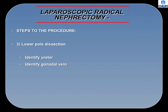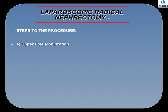Lower pole dissection usually involves the identification of the ureter and the gonadal vein. These two are transected and allow for the surgeon to work toward the renal hilum. Step 4: Upper pole mobilization, in which the surgeon's attention is drawn toward the area of the adrenal gland, as well as dissecting the kidney free from the spleen or the liver through all tissue down to the psoas muscle, which is the posterior plane. This liberation of both the lower pole and upper pole sets up a much easier and larger working space for renal hilum dissection.